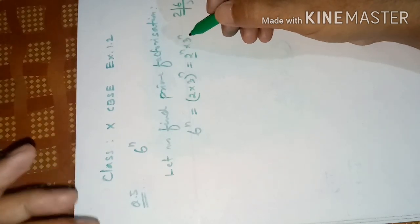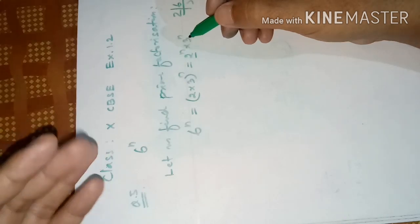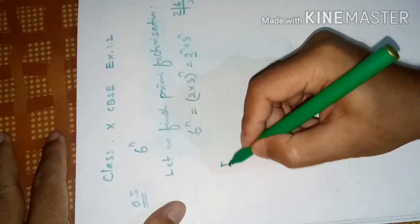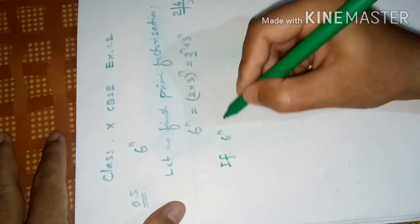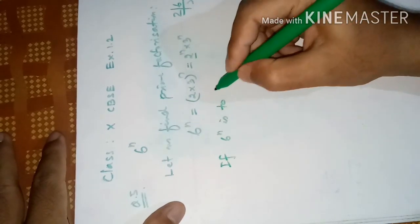So that means, for any power n, 6^n will not be ending with 0. If 6^n is to end with digit 0, its prime factorization should have both 2 and 5.